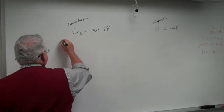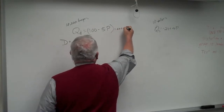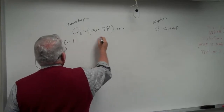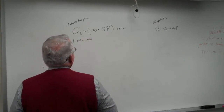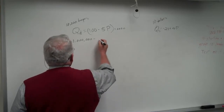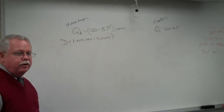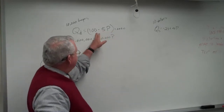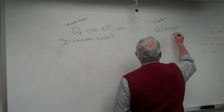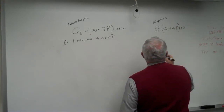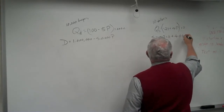First you get the demand equation for the entire market — it's this times 10,000. 10,000 times 100, and 10,000 times negative 5P. For sellers, I'm going to take this individual equation and multiply it by 10 sellers, so my supply is going to be 10 times negative 21, plus 10 times positive 4P.